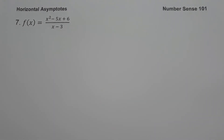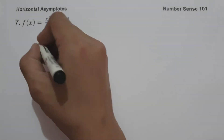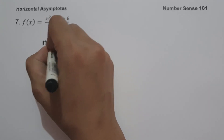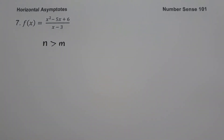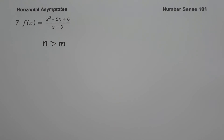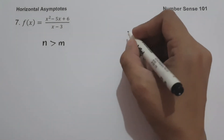On example number seven, we have f(x) equals x squared minus 5x plus 6, all over x minus 3. Since the degree of the numerator is greater than the degree of the denominator, we have n greater than m, so there is no horizontal asymptote. However, since the degree of the numerator exceeds the degree of the denominator by exactly 1, there is an oblique asymptote. To find it, we divide the numerator by the denominator using long division and disregard the remainder.